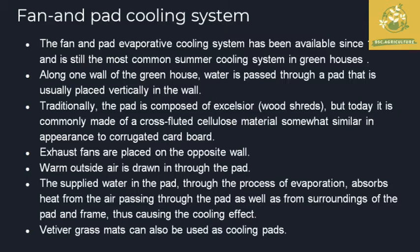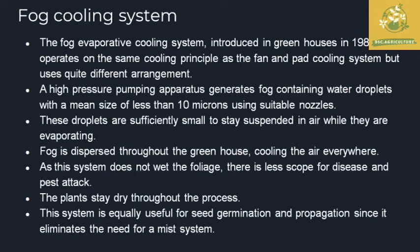Now there is a cross-fluted cellulose material similar to corrugated cardboard material that you can use to maintain the pad system. The exhaust fans are on the opposite wall from the pads. The cooling system works inside the greenhouse: water passes through the pads, and through the evaporation process the water vapor moves into the environment, cooling the air. The wet bulb temperature drives this temperature change. Alternatives include wet grass mats, and these are alternative cooling pads compared to the fan-and-pad system, though there are quite different arrangements.